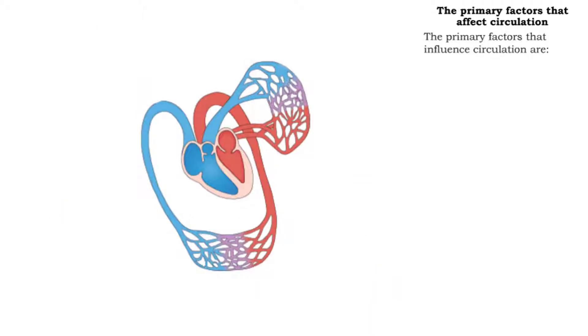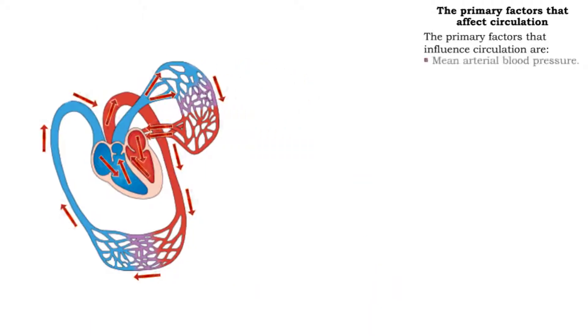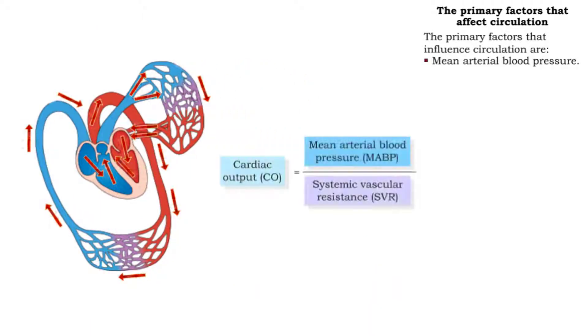The primary factors that influence circulation are mean arterial blood pressure, systemic vascular resistance, and cardiac output.